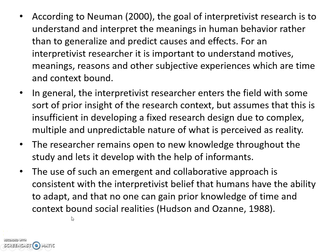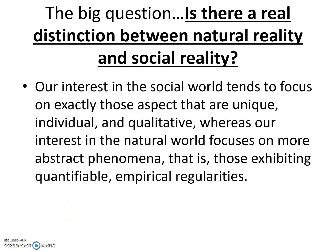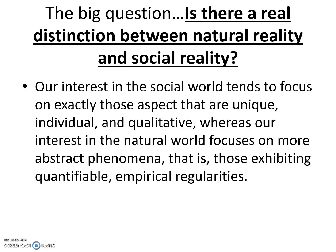This comes from the interpretivist belief that humans have the ability to adapt and that no one can gain prior knowledge of time and context-bound social realities. So the big question is: is there a real distinction between natural reality and social reality? If you read the chapters on interpretivism, you'll see that some philosophers who contributed to this approach have differences in their opinions on this very question. Our interest in the social world tends to focus on exactly those aspects that are unique, individual, and qualitative.